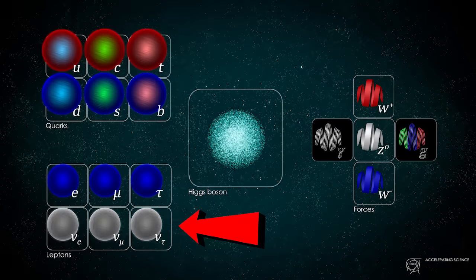Neutrinos are ghostly particles that interact incredibly weakly with matter. If you fired a beam of neutrinos at a light year of lead, half would pass through. The Standard Model of particle physics contains three types, or flavours, of neutrino, each with a corresponding antiparticle.